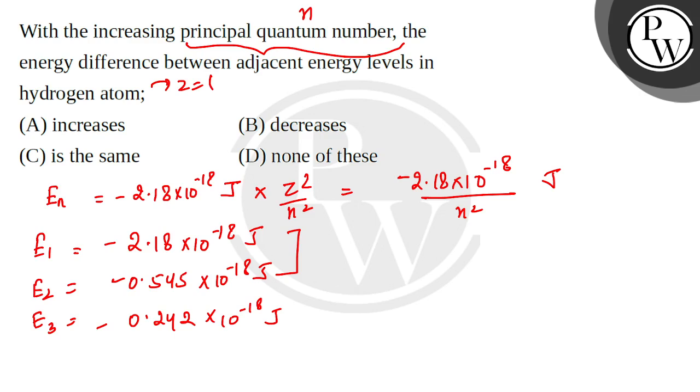If you calculate E2, it equals minus 0.545 into 10 to the power minus 18 joule. E3 equals minus 0.242 into 10 to the power minus 18 joule. If you do this, the difference will be 0.303.